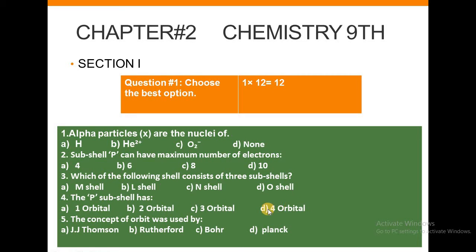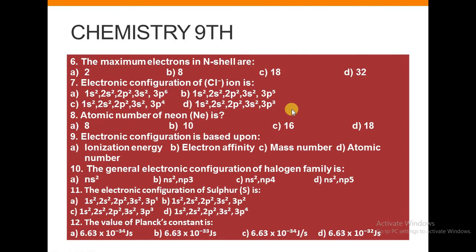Next: The concept of orbit was used by: a) J.J. Thomson, b) Rutherford, c) Bohr, or d) Planck. Next is number 6: The maximum electrons in N shell are: a) 2, b) 8, c) 18, or d) 32.